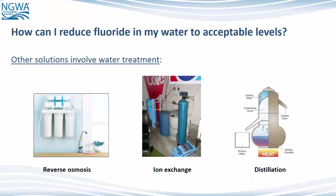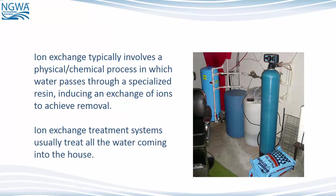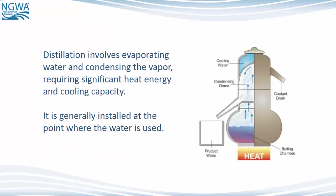Other solutions involve water treatment, including reverse osmosis, ion exchange, and distillation. Reverse osmosis removes dissolved ions from water by forcing water through a semi-permeable membrane, retaining most ions while transmitting the water. RO units typically are installed at the point of use, such as the kitchen sink, but can be installed where water enters the house. Ion exchange typically involves a physical-chemical process in which water passes through a specialized resin, inducing an exchange of ions to achieve removal, and usually treats all the water coming into the house. Distillation involves evaporating water and condensing the vapor, requiring significant heat energy and cooling capacity, and is generally installed at the point where the water is used.